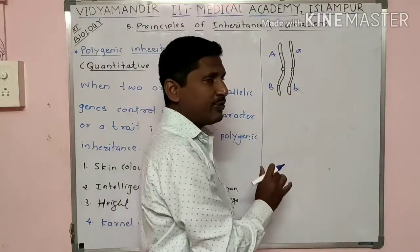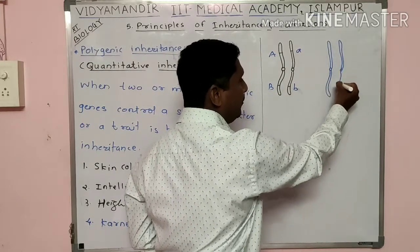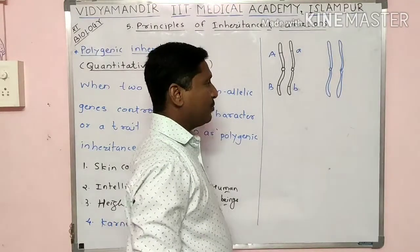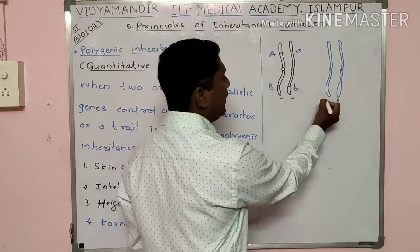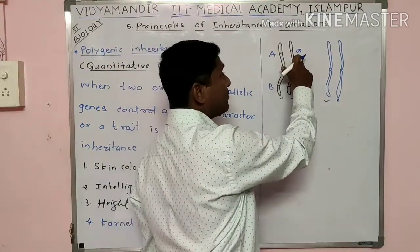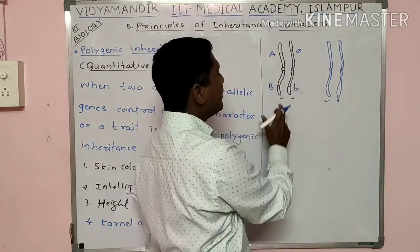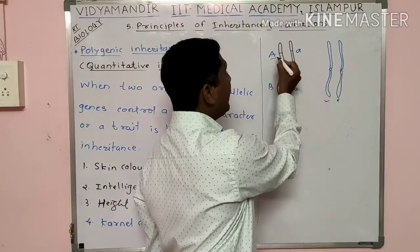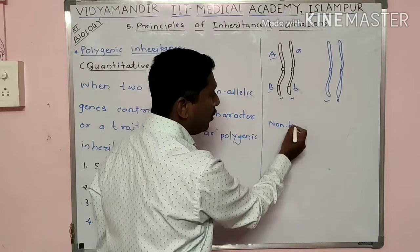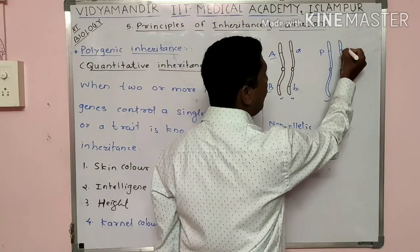On homologous chromosomes, genes occupy the same position — capital A and small a, capital B and small b. These are allelic genes because they are at the same locus on homologous chromosomes. But genes on different loci are non-allelic genes.